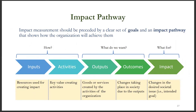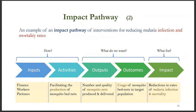Impact measurement should be preceded by a clear set of goals and an impact pathway that shows how these goals will be achieved. The impact pathway outlines how the impact is created by identifying the inputs and activities the business needs. It also shows what is created by identifying the outputs and outcomes involved in creating impact. The impact pathway further indicates why the outputs and outcomes are created by specifying the desired social change. For example, certain interventions could have the desired social impact of reducing malaria infection and mortality rates.